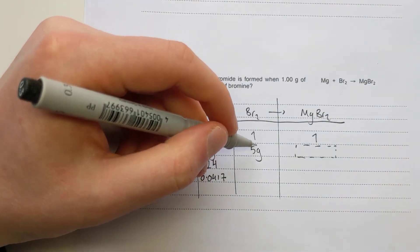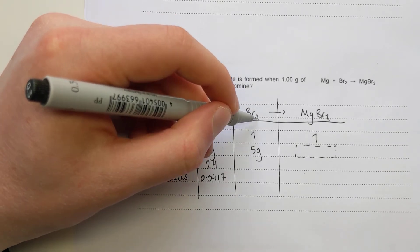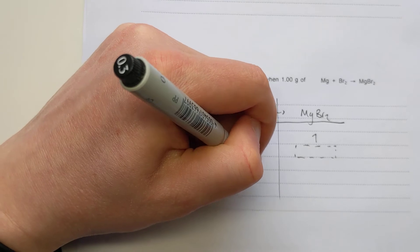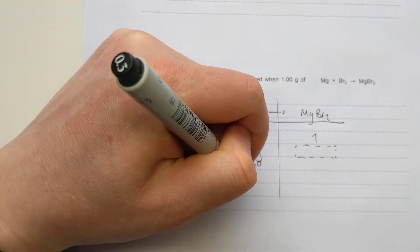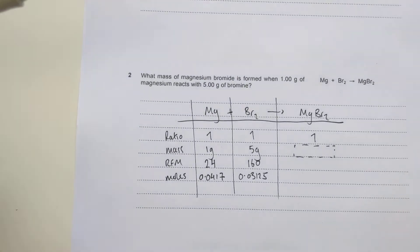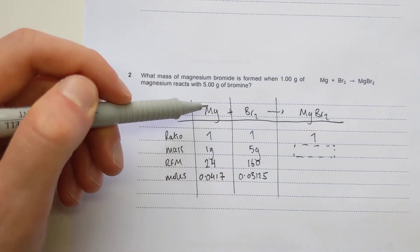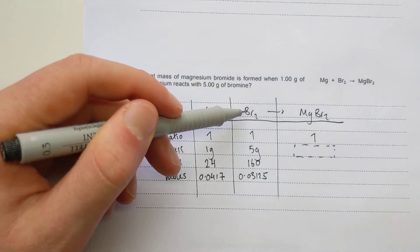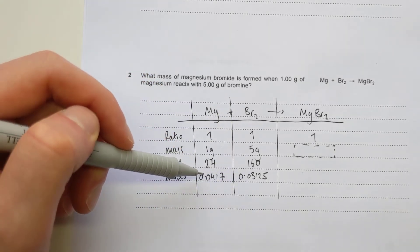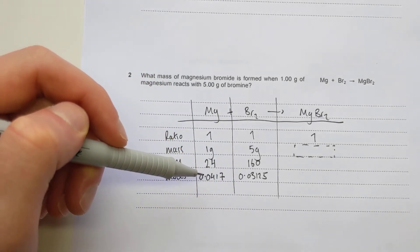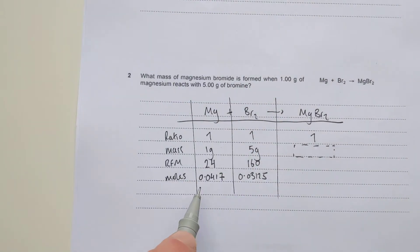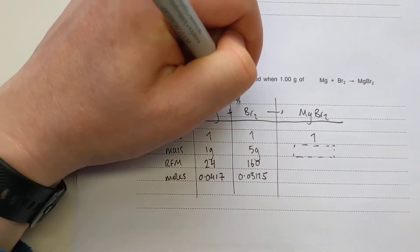For bromine, it's 5 grams. I have to be careful here - there are two bromines in the formula due to the subscript 2, so the RFM is actually 160. That gives a number of moles of 0.03125. Again, because it's a one-to-one ratio for magnesium reacting with one bromine molecule, I can just pick the smaller one as the limiting reactant. In this case that's the bromine - 0.03 versus 0.04 - so bromine is limiting.